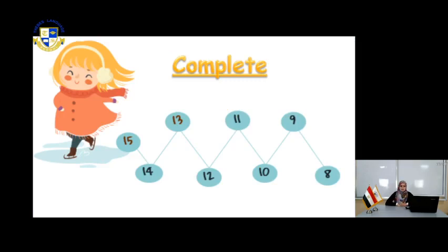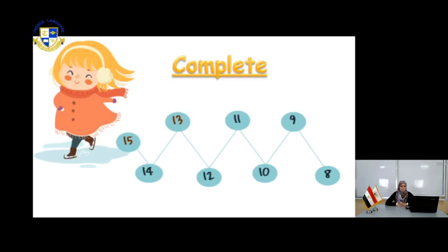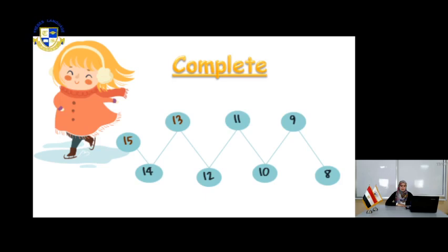In this page, let's complete these numbers. You have 15 and 14. What's less than 15? Yes, 14. For 13, which number is less than 13? It's 12. For 11, which number is less than 11? It's 10. For 9, which number is less than 9? It's 8. So you have 8, 9, 10, 11, 12, 13, 14, 15.